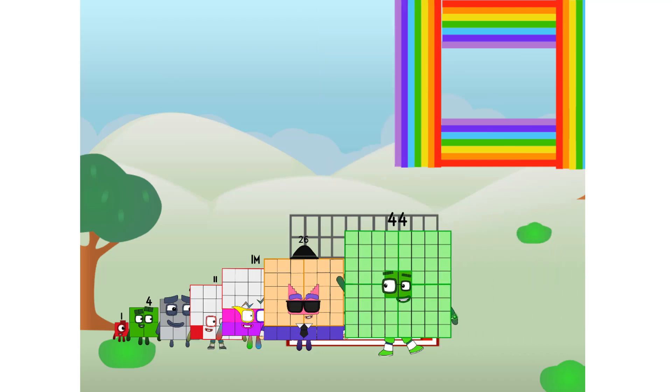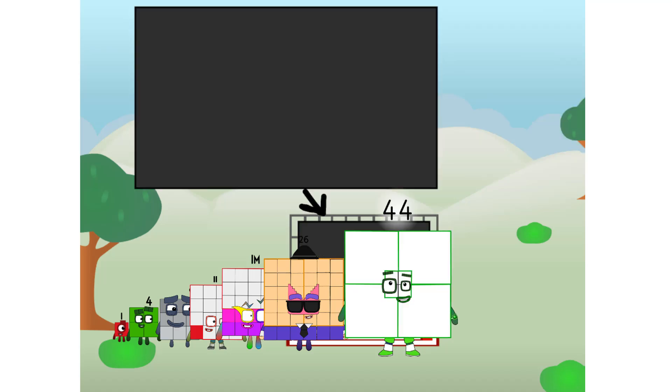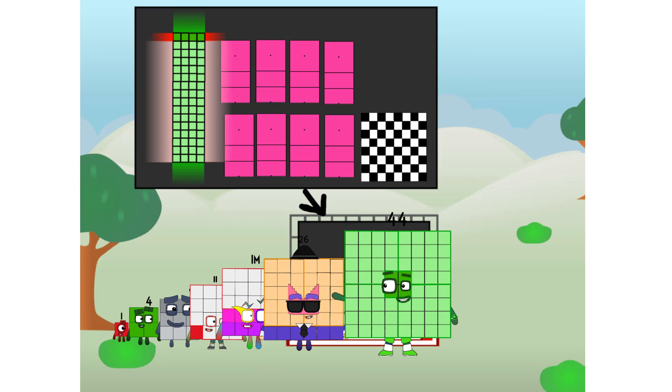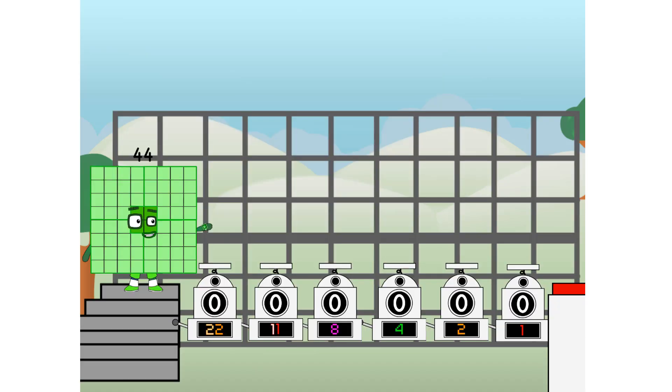There you are. This way. I've got so much to show you. I am 44. And I can be a strong square, a chessboard, a super rectangle, 8 octoblocks, or even a super cube. But today, I want to show you a little trick I call binary boosters.